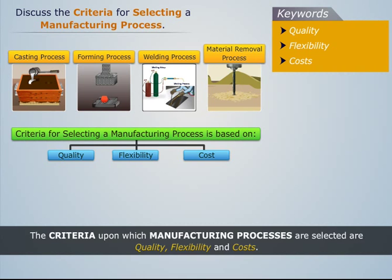Thus, we can say that the criteria for selecting a manufacturing process are based on three main factors: quality, flexibility, and cost.